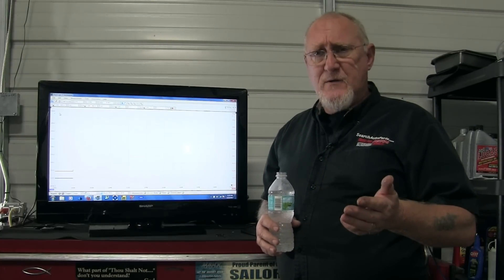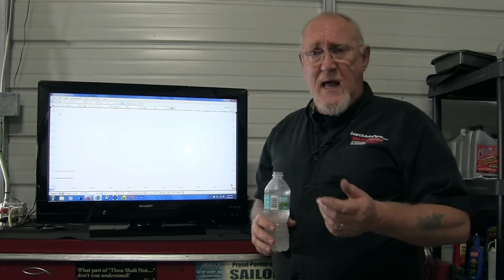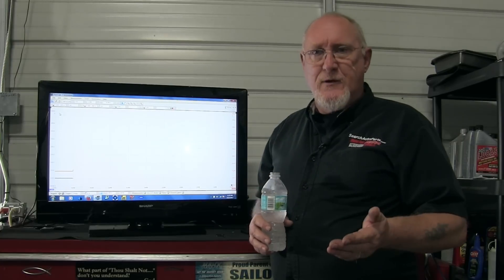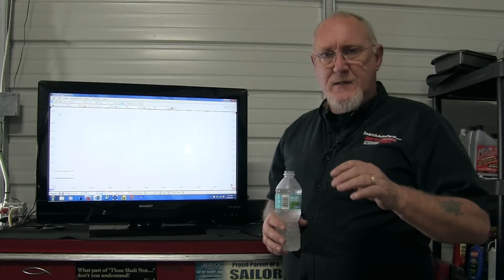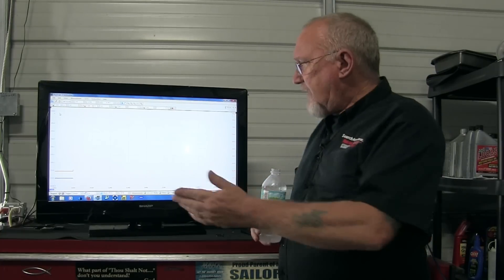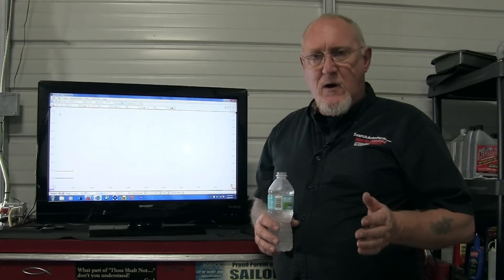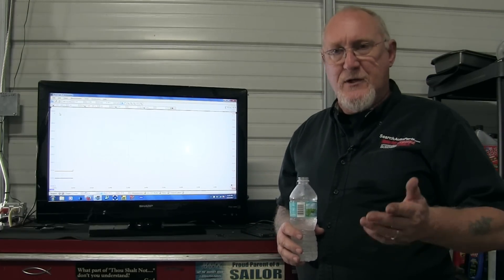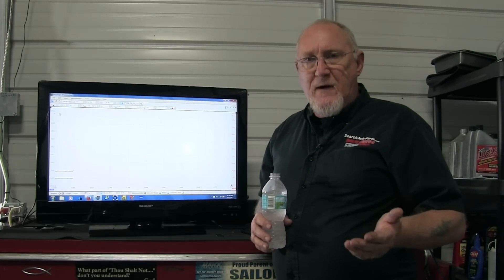We're going to use a feature of the Pico scope today when performing this relative compression test that will allow me to not worry about what the scope's doing while I go in and crank the engine over. It's called the single capture trigger. It's going to take one screen full of data and stop, and I can set the trigger level so it's not going to start until I actually turn the key to the crank position. I'll show you how to set that up momentarily, and we're also going to add a reference to it.